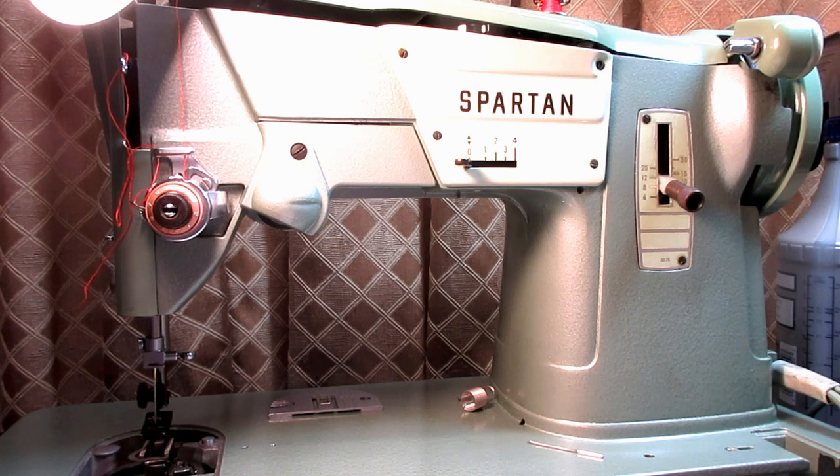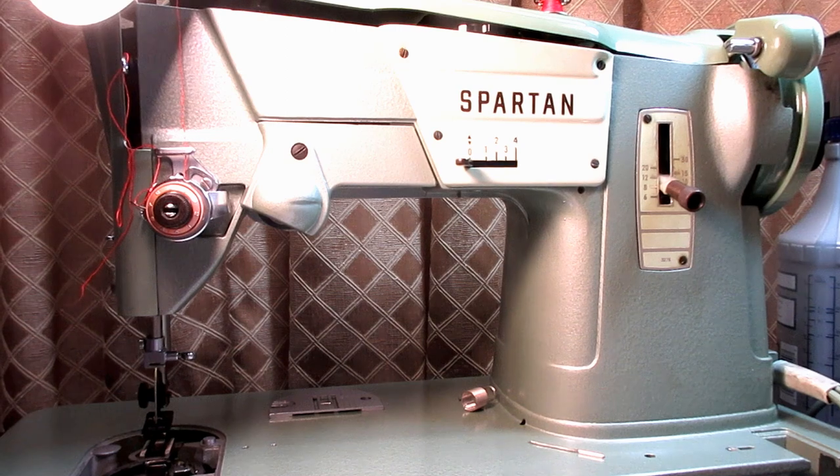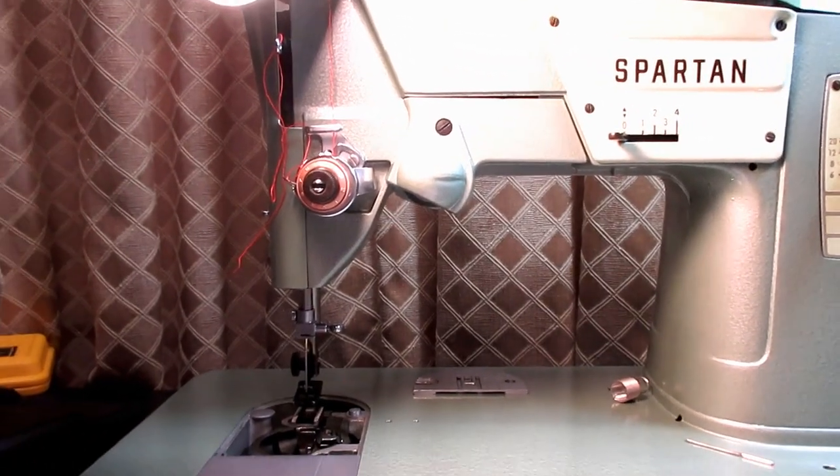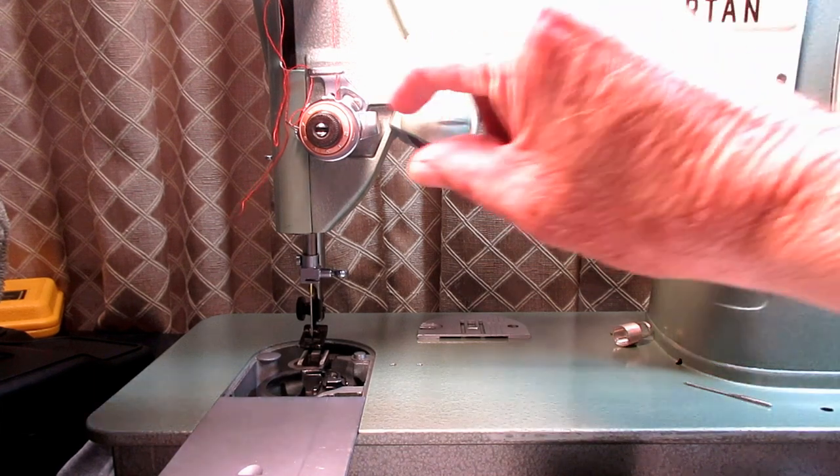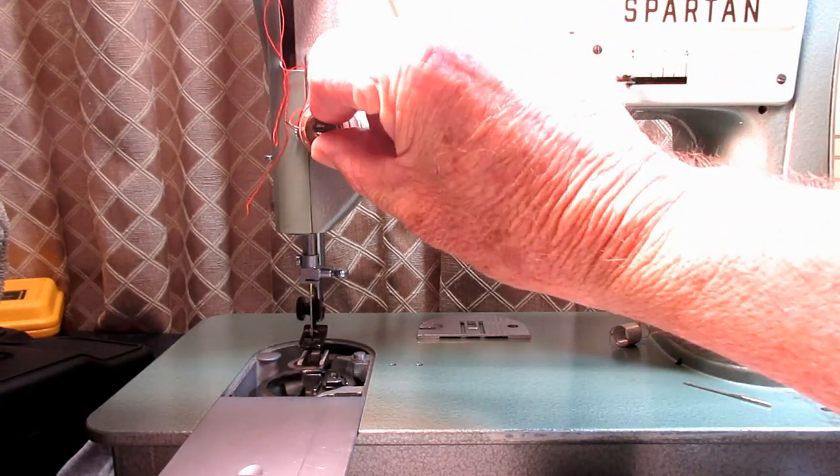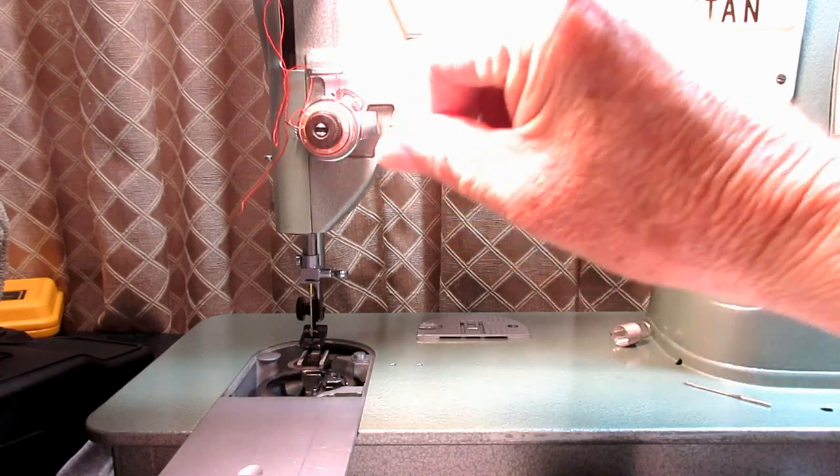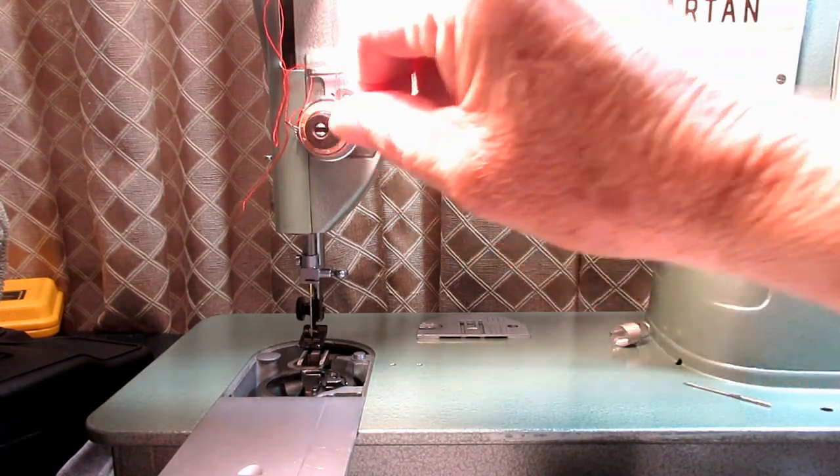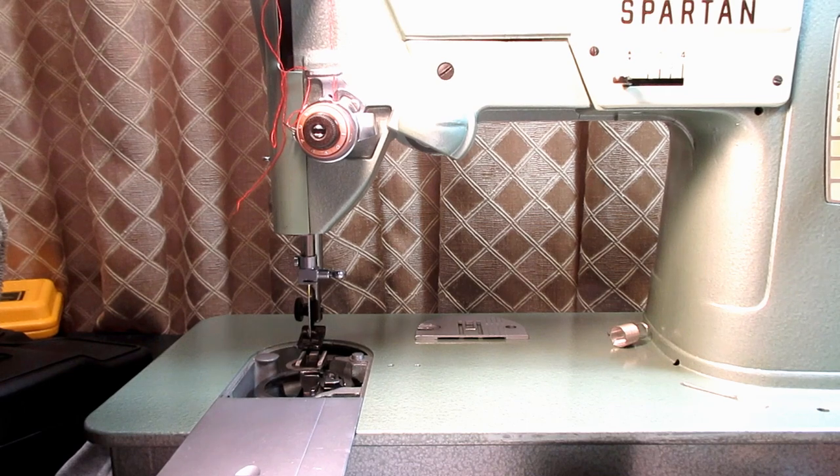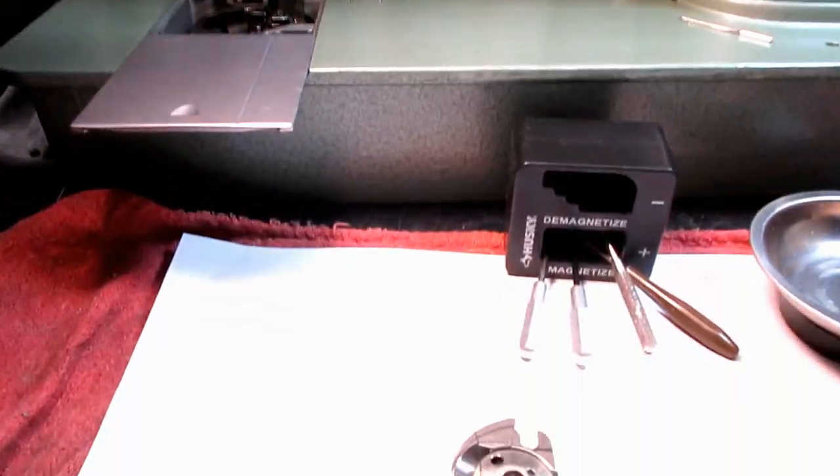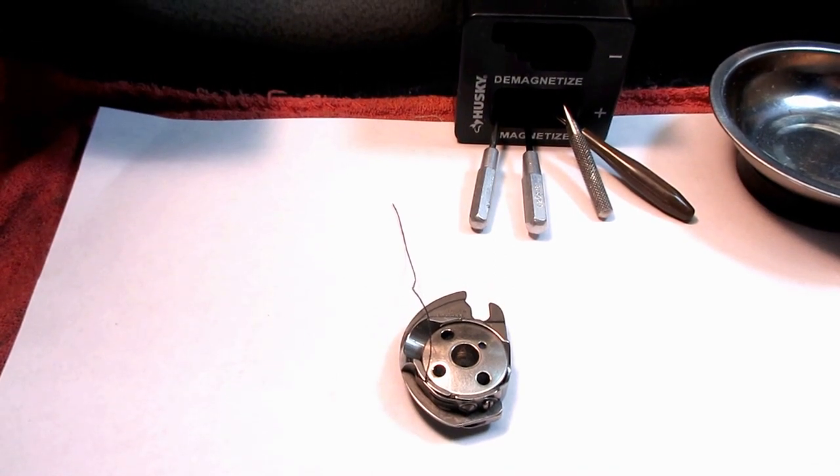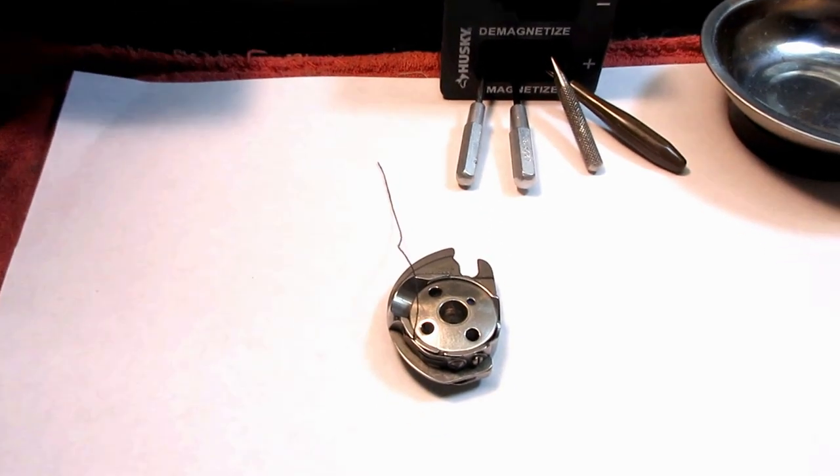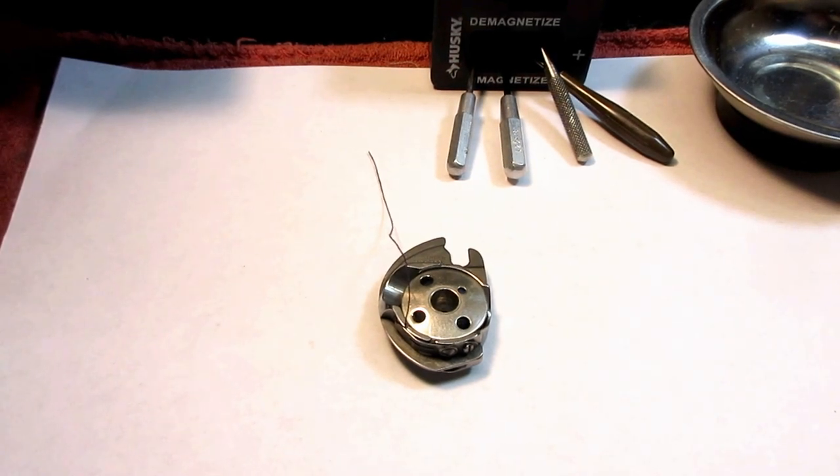And while I was working on a Singer Spartan 327k I had rebuilt the thread tension unit, cleaned it up and adjusted it. But I couldn't get a good stitch and no matter how I adjusted the tension. So I reset it to zero and started looking at the bobbin case. And this is the bobbin case. It's all metal and it's very common to a dozen or two models of vintage Singer sewing machines.